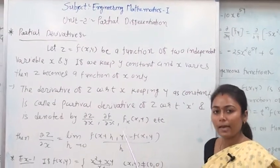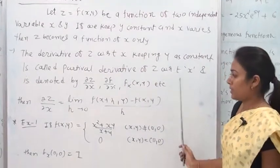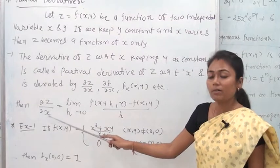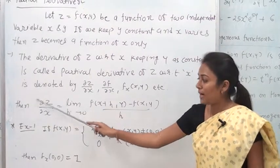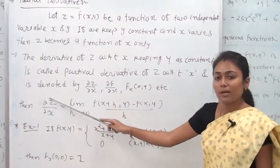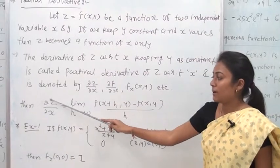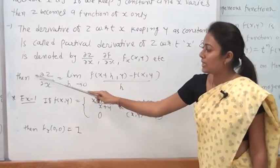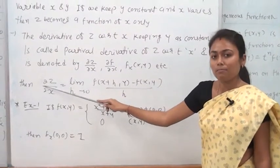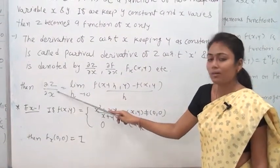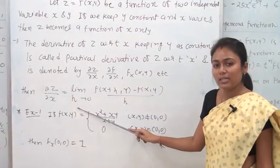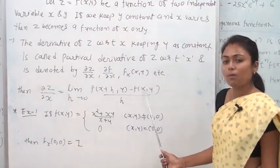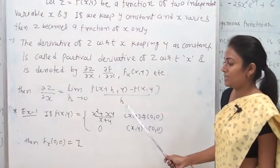It is also denoted by f_x(x, y). The partial derivative ∂z/∂x is defined using the del symbol, and equals the limit as h tends to 0 of [f(x+h, y) − f(x, y)] divided by h.